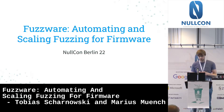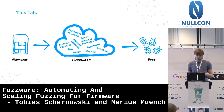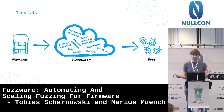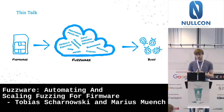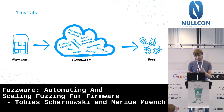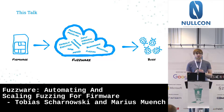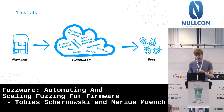This talk is called Fuzzware: Automating and Scaling Fuzzing for Firmware. In a nutshell, we want to take some firmware from binaries that come from IoT platforms or small embedded systems — which have a bit of a different format than what you would normally be used to — put this firmware into the cloud, and then get bugs out of it. This talk is about how we can achieve this.